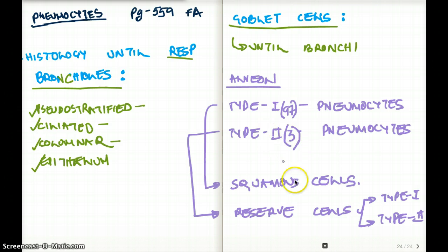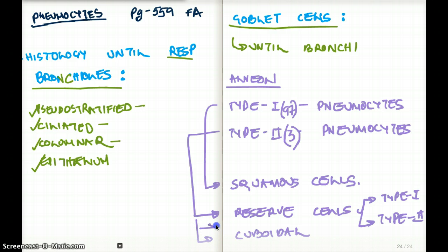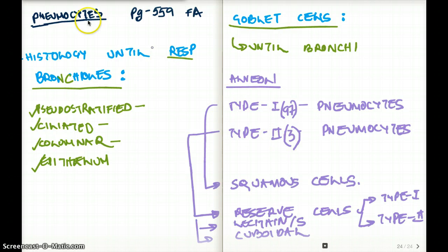Type 1 is squamous, while type 2 is going to be cuboidal cells. Type 2 pneumocytes also secrete lecithin and sphingomyelin, which is necessary for maximal decrease in surface tension so that the lungs can inflate very easily. Those secretions are secreted by the type 2 pneumocytes.